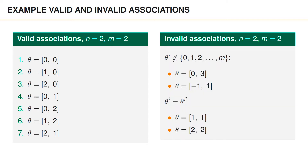We can also look at what some invalid associations are for this example with two objects and two measurements. First, we have two example associations that are invalid because for at least one of the objects, the association does not belong to the set of integers from 0, 1, 2, up to m_k. Then we have two example associations that are invalid because the same measurement has been associated to multiple objects.